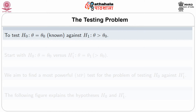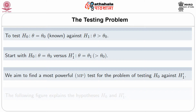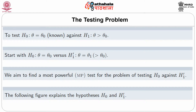Consider the problem of testing H₀: θ = θ₀ (θ₀ known) against H₁: θ > θ₀. First, start with H₀: θ = θ₀ versus H₁': θ = θ₁ where θ₁ > θ₀. Here the null hypothesis is simple and the alternative hypothesis is also simple, and we aim to find a most powerful test. The following figure explains the hypothesis H₀ and H₁'.